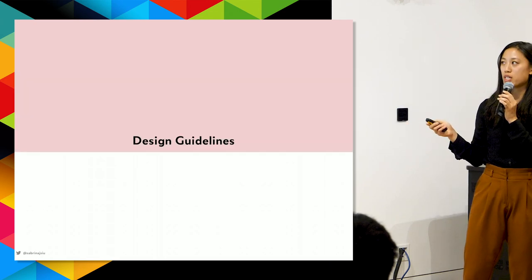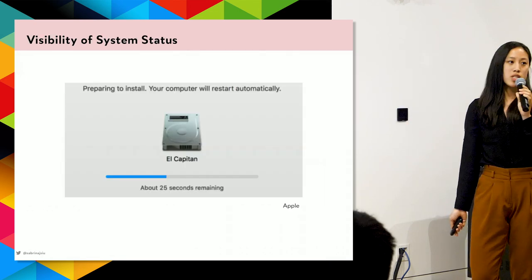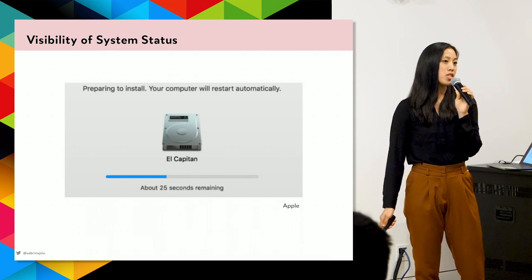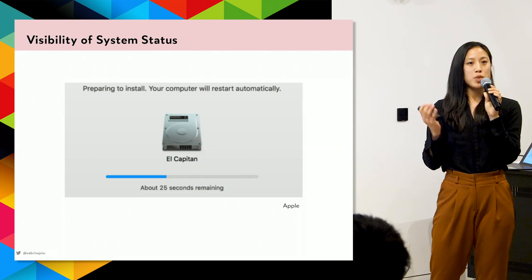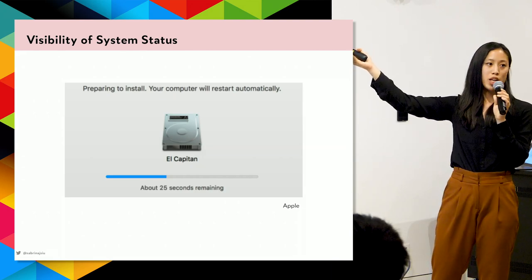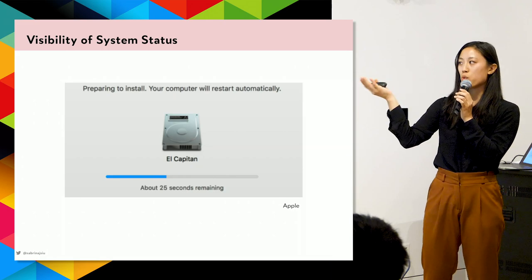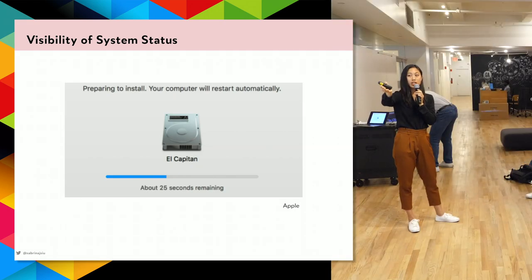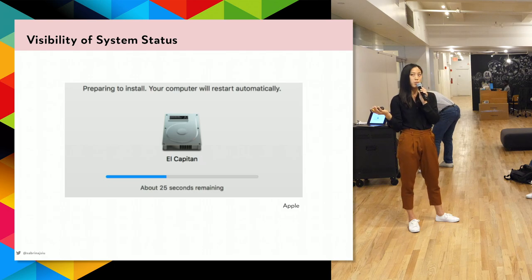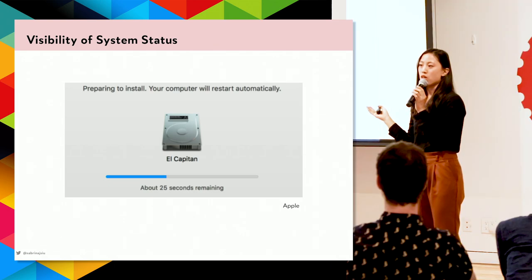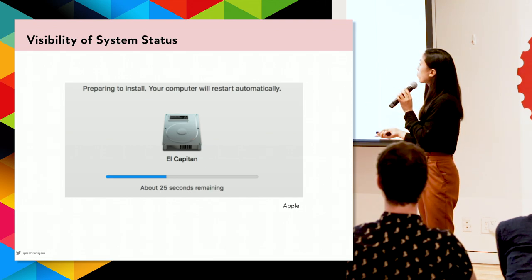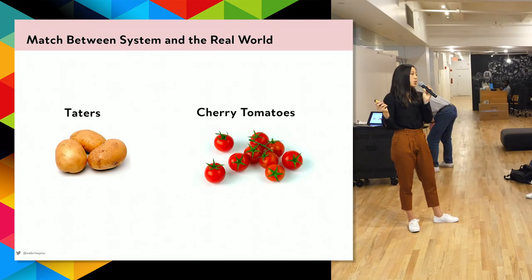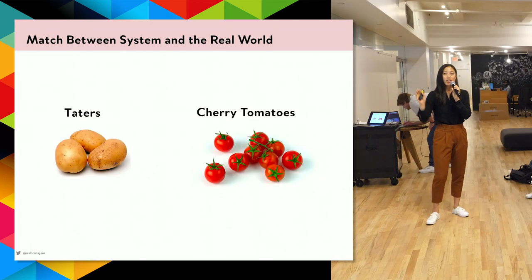Some heuristics I follow: visibility of system status — whatever the system is doing should be really obvious. For example, when installing OS X El Capitan on my Mac, I can see there are about 25 seconds remaining, which is less than half the total time. And I know the computer is going to restart right after, so when it blacks out, I'm not surprised. It sets my expectations up for success.